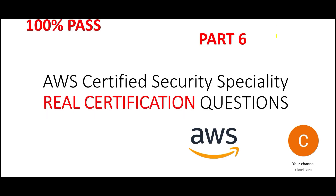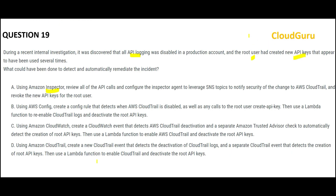If you are wondering where part 5 is — part 5 is in the members group. Cloud Kernel or Cloud Ninja members can view that. There will be many more parts posted in the members group. Those are very important questions. Together with those question sets, the chances of clearing your certification are very high. So do not wait. Click the join button below this video or in the description. With a very small premium, you can become a member. Let us jump into the questions.